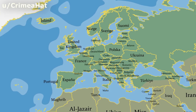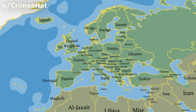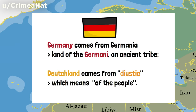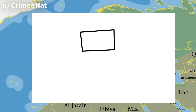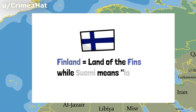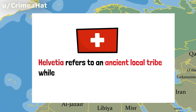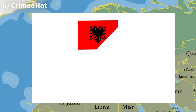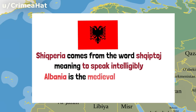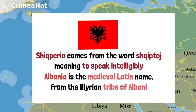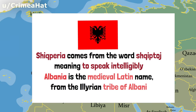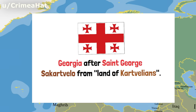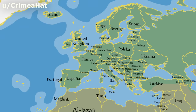Oh, and Hungary, whose endonym is Magyarország. Germany comes from Germania, land of the Germani, an ancient tribe of the area named by Julius Caesar, while Deutschland comes from the Old High German Deutsch, meaning 'of the people' — essentially land of the people. Finland equals land of the Fens, while Suomi just means land. Helvetia refers to an ancient local tribe, while Switzerland means land of the Swiss. Greece was the Roman Latin name for Ellas. Shqipëria is derived from the word Shkiptar, meaning 'to speak intelligibly,' while Albania is the medieval Latin name, possibly derived from the Illyrian tribe of the Albani. Armenia's endonym is Hayastan, and Georgia's is Sakartvelo — Georgia after St. George, or some say it has a Russian origin — while Sakartvelo is the native term for land of the Kartvelians.